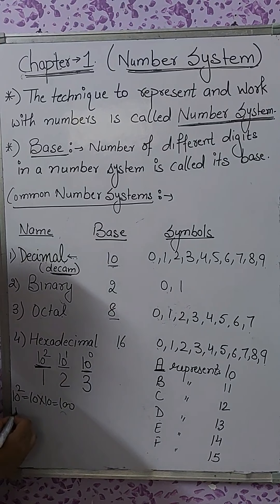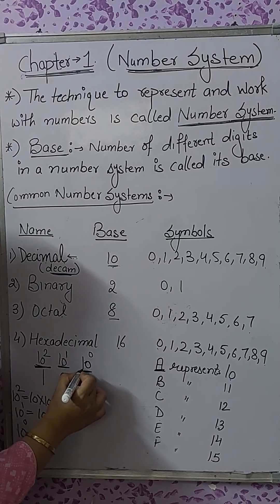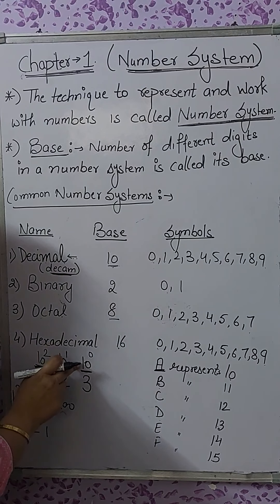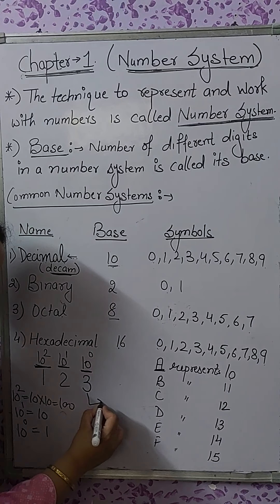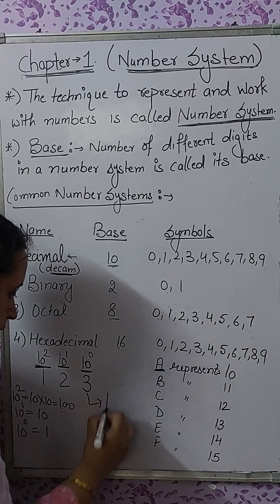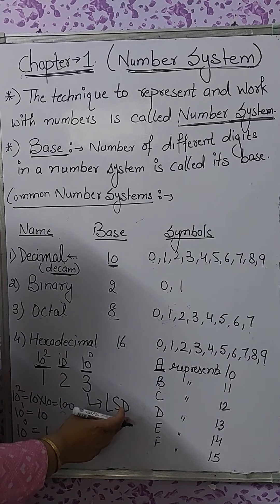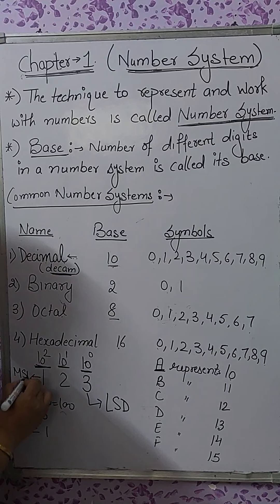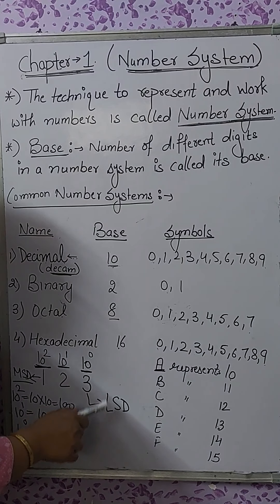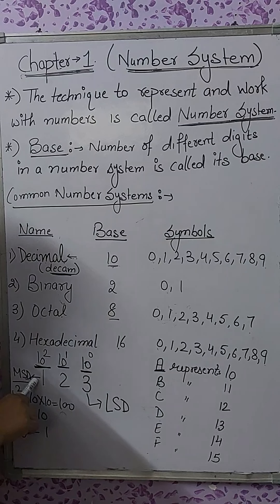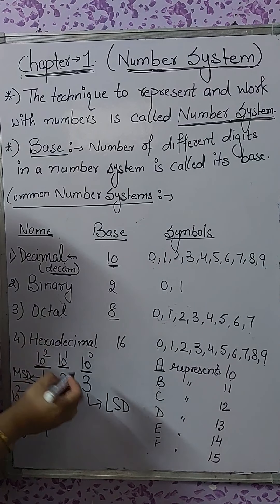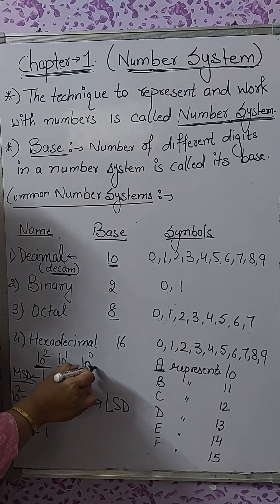10 raised to the power 1 means 10, and any number raised to the power 0 equals 1. So this is your 10th place and this is your 1st place — and these are derived from the base. In any number system, the rightmost digit is called the least significant digit, or LSD. The leftmost digit is known as MSD, the most significant digit, because it is at the highest place value. The rightmost digit has a low positional value, that is why it is the least significant digit.